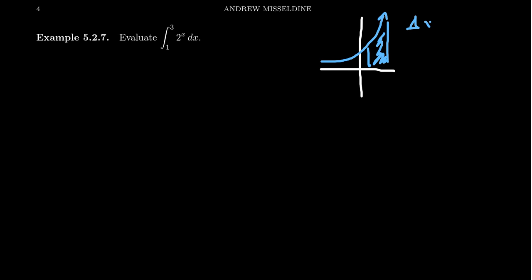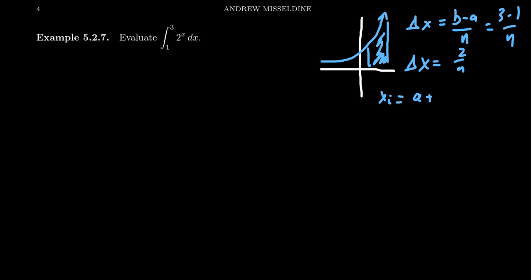As usual, we should figure out what delta x is: b minus a over n. Taking the bounds given by the integral, that's 3 minus 1 over n, which simplifies to delta x equals 2 over n. We have to calculate x_i, which always looks like a plus i times delta x. So a here is 1, and delta x is 2 over n. There's not a whole lot to simplify; we just get 1 plus 2i over n.